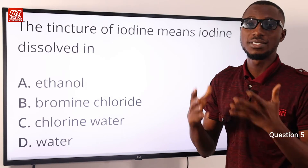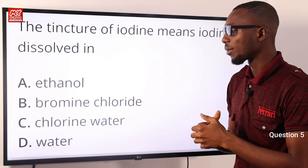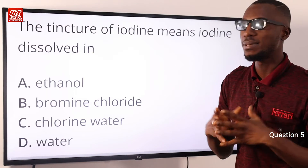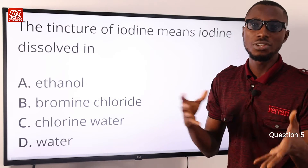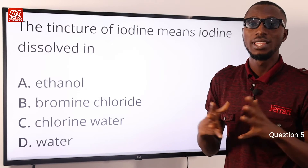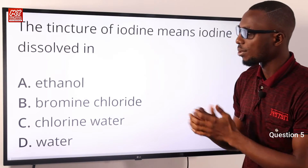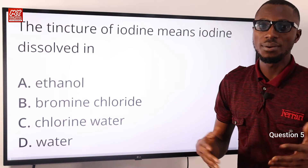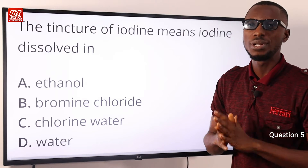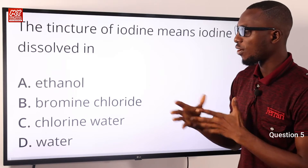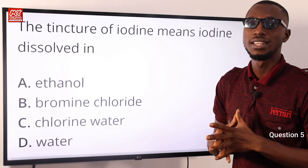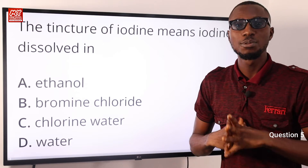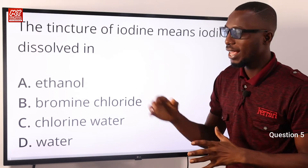Option B is bromine monochloride, also referred to as bromine(I) chloride — a pungent gas with a reddish-yellow or golden-yellow color that is very reactive. Option C is chlorine water — either as chlorination of water to kill bacteria and reduce waterborne diseases, or when chlorine water is exposed to sunlight so that oxygen can be liberated. Option D is water. To wrap up, the correct answer is option A for ethanol.